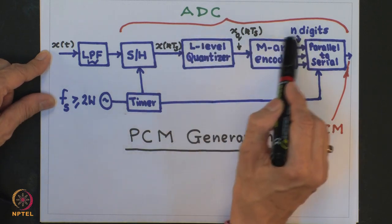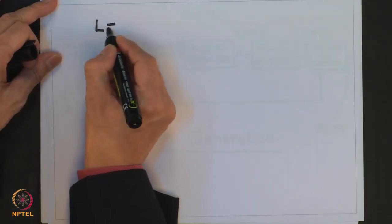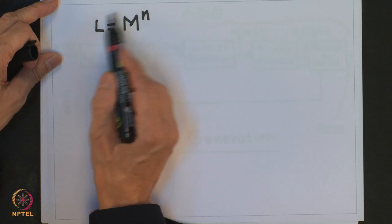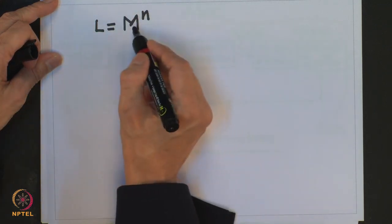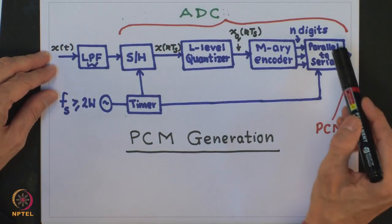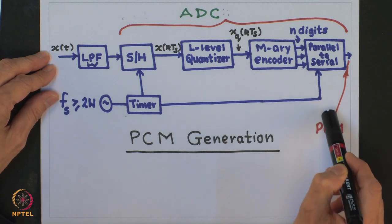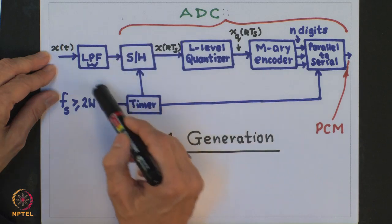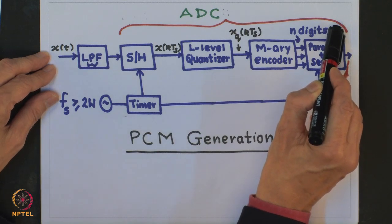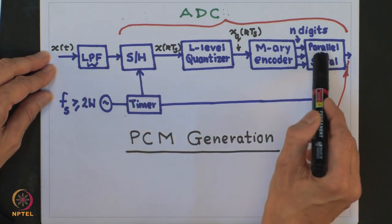Since there are M^n possible M-ary codewords with n digits per word, unique encoding of L different levels requires that M^n ≥ L. For binary PCM, since M = 2, the number of levels must equal a power of 2, giving L = 2^n. Finally, successive codewords are read out serially to constitute the PCM waveform, which is an M-ary digital signal. The PCM generator thereby acts as an analog-to-digital converter operating at the sampling rate Fs. A timing circuit coordinates the sampling and parallel-to-serial readout.